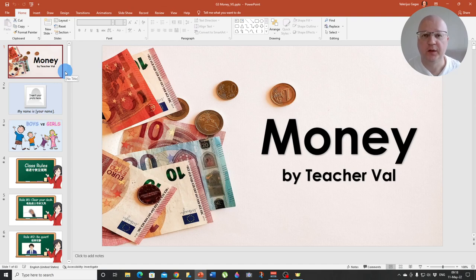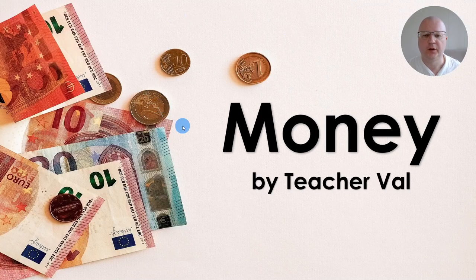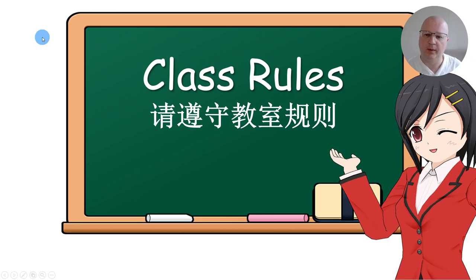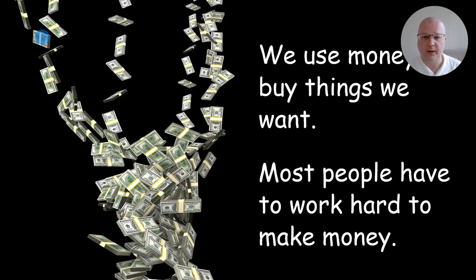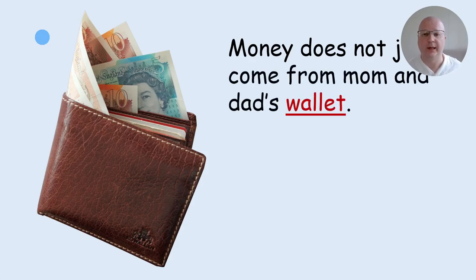Let's take a good look at this PowerPoint lesson. Here's the first slide: Money, by Teacher Val. I'm going to skip the class rules because they don't change. So in this part you read it together with your students: 'We use money to buy things we want. Most people have to work hard to make money.' You can tell your students that money does not just come from mom and dad's wallet. This word is hyperlinked — if you click on it, it's going to take you to the slide which illustrates this word.